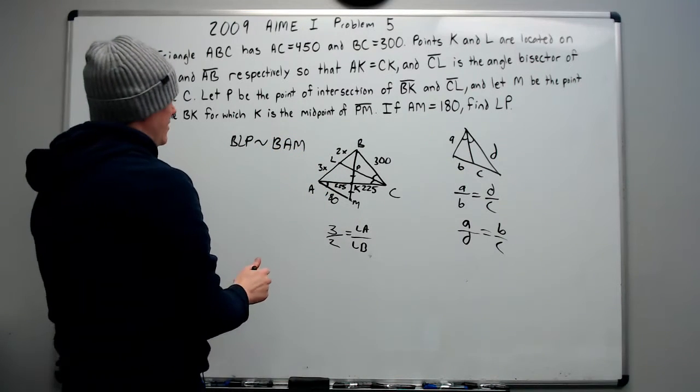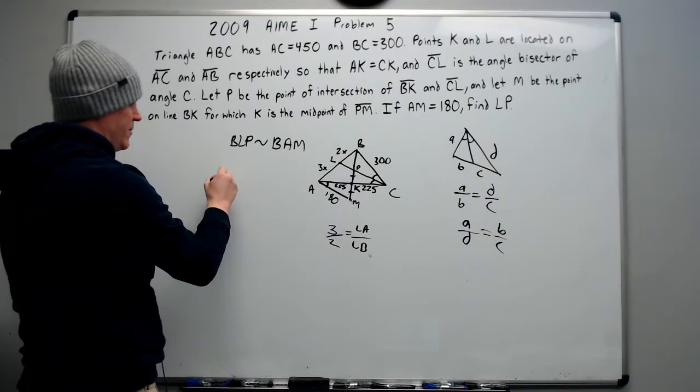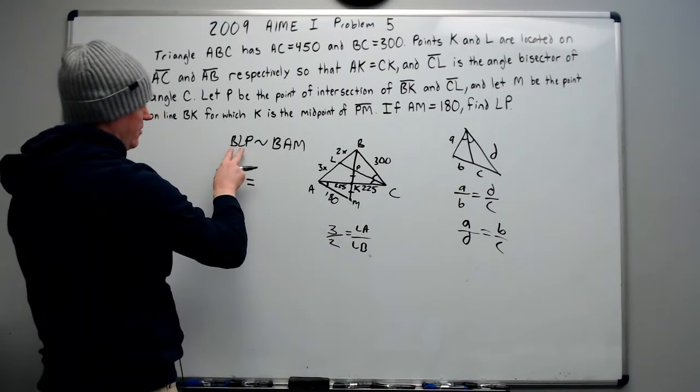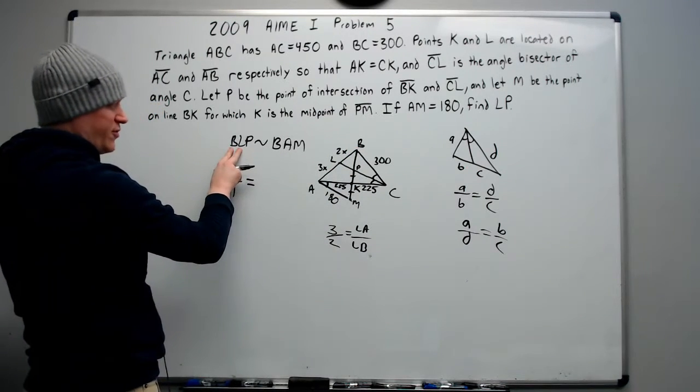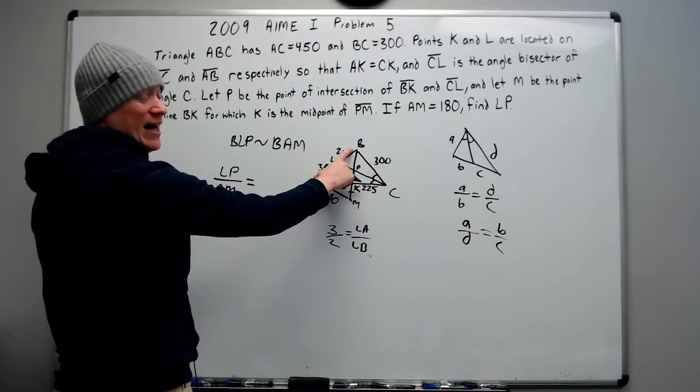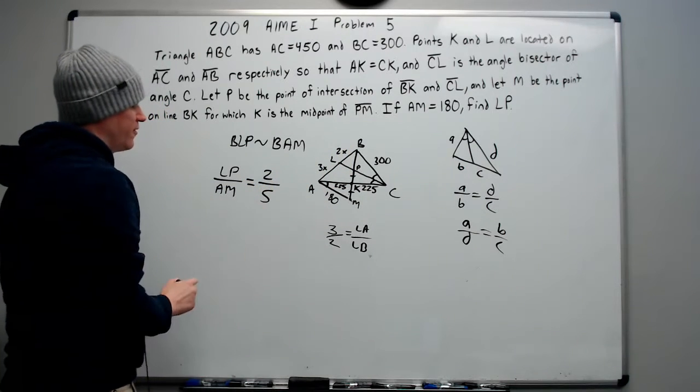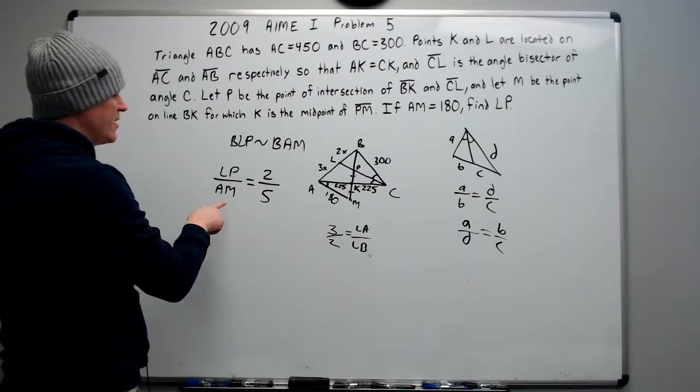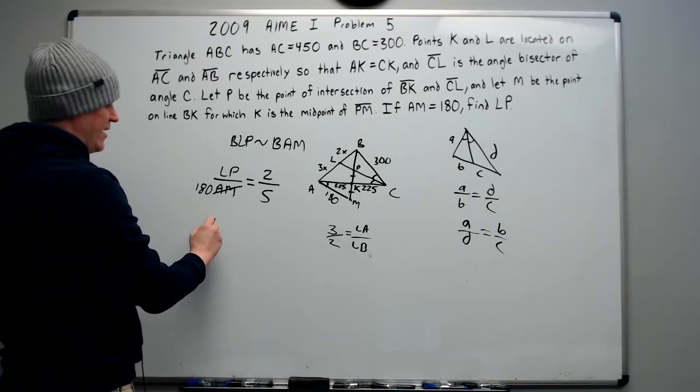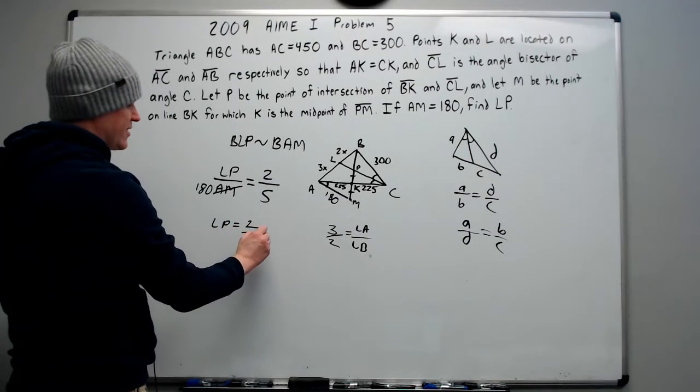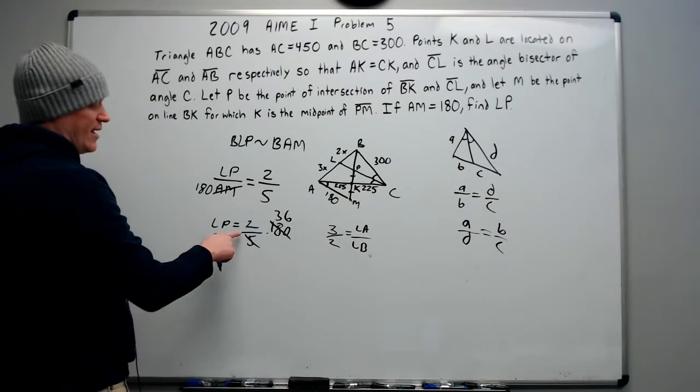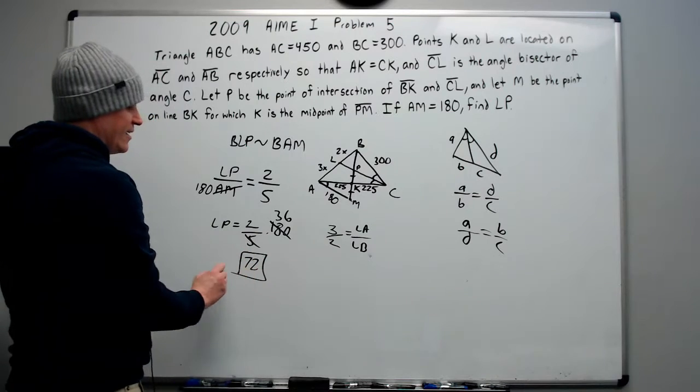And as such, that means that LP over AM is equal to LB, which is these two, the first two, over AB. Be careful not to make it 2 to 3. That's not correct. It's 2 to 5, right? So this is equal to 2 over 5, and the thing is, we know what AM is. They told us. It's 180. This problem's basically done. LP equals two-fifths times 180. 5 goes into 180 36 times, and 2 times 36 is 72.